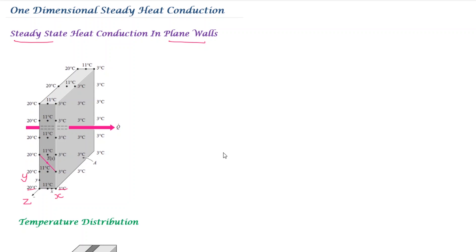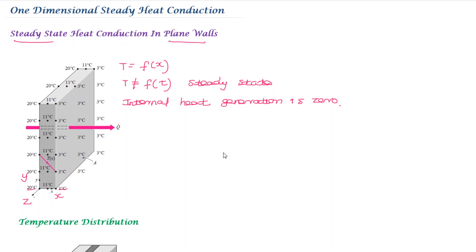The temperature is a function of x only. The temperature is independent of time — it is steady state. The internal heat generation is zero. So: temperature is a function of x, temperature is independent of time, and we are looking at steady state.